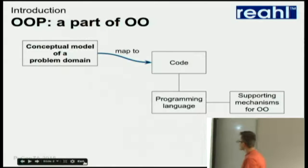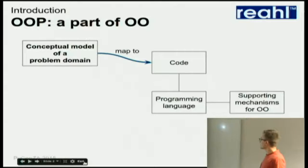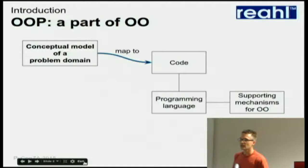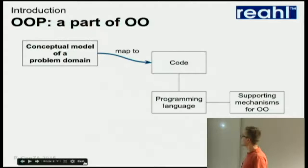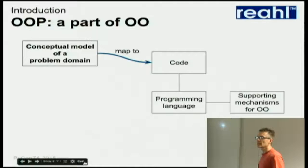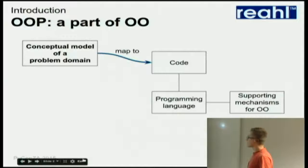A lot of people think that OO is all about the mechanisms that a programming language actually gives you, and if you go into Google and look for tutorials, that's what's being taught. Although that's not really how you should look at it, because the whole idea of object-oriented methods is that you should start with a conceptual model of your problem domain. Then map that to code in a programming language, and if you're lucky you've got a language that supports those mechanisms. You don't need that, but it helps a bit. So it's actually a much smaller part of the bigger picture.